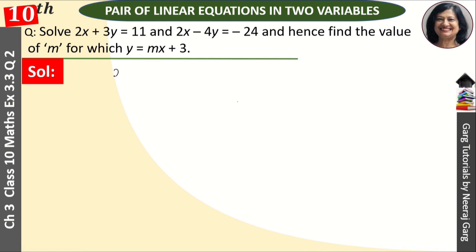Hamare paas 2 equations given hai: 2x plus 3y is equal to 11 and 2x minus 4y is equal to minus 24. Yeh humari first equation ho gayi and yeh humari second equation ho gayi.